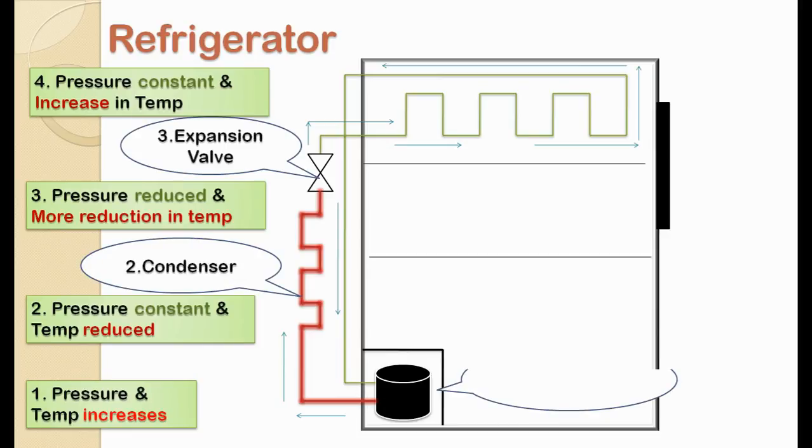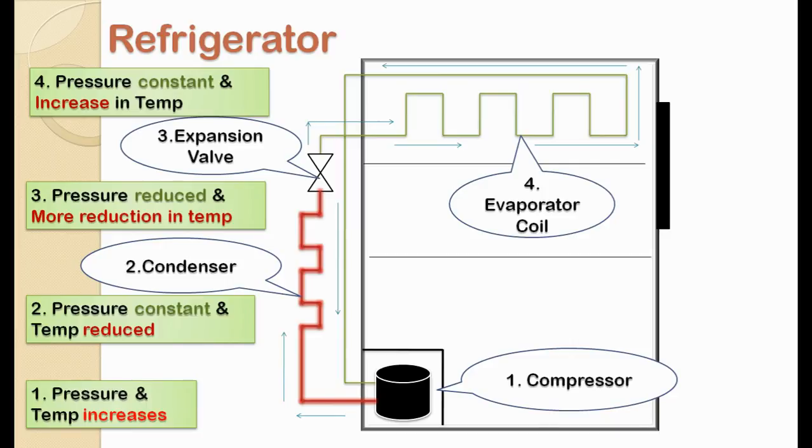Now this low temperature coolant flows through the evaporator coil which is present inside the refrigerator. Since the temperature of coolant flowing through evaporator coil is very low compared to the food present in the fridge, heat starts flowing from the food items to coolant through evaporator coil. Now since coolant has absorbed the heat from foods, its temperature again starts to increase, and it starts to get converted into gaseous state, and it flows to the compressor again.